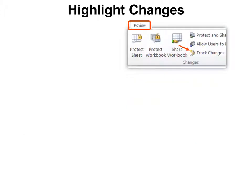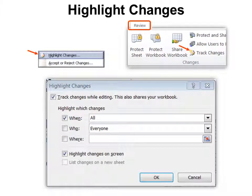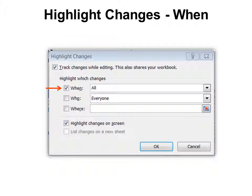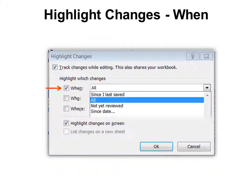Under Review, Track Changes, you can choose to Highlight Changes — this is one way to turn it on. There are three filter options: When, Who, and Where. Under 'When,' you can choose: Since I last saved, All changes, Those not yet reviewed, or Since a specific date.